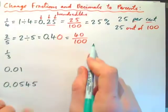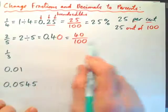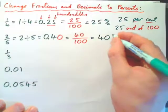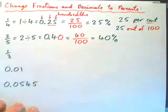And forty over a hundred by definition is forty per hundred, forty percent.